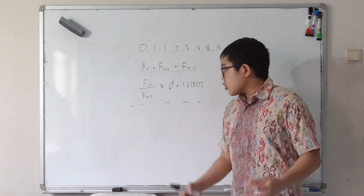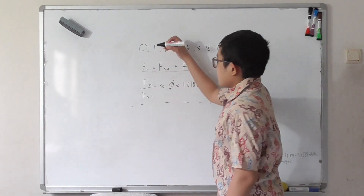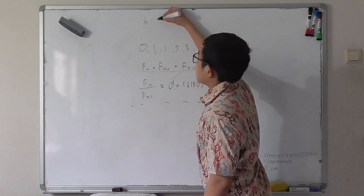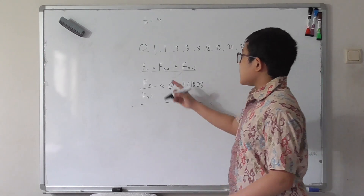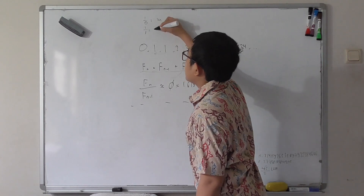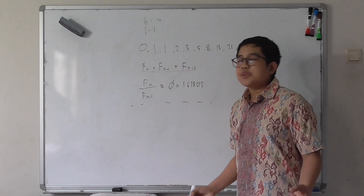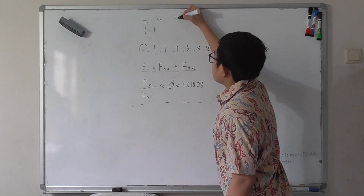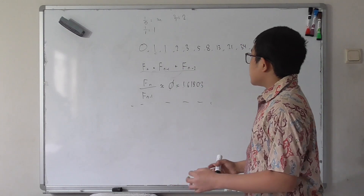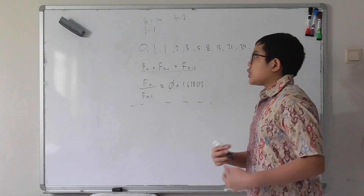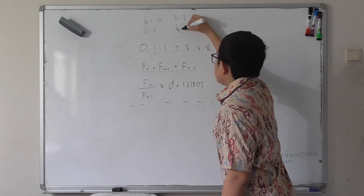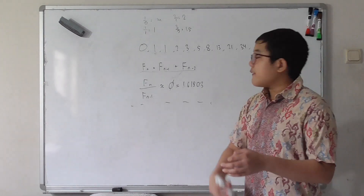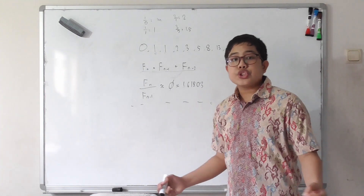For example, if we take the first term — 1 divided by 0 — we get undefined, because we can't divide by zero. But 1 divided by 1 equals 1, which matches the first digit of the golden ratio. Then 2 divided by 1 is 2, which is closer to the golden ratio than 1 was. And 3 divided by 2 is 1.5, which is pretty close and almost resembles the second digit. As we use larger and larger values, we're going to approximate the golden ratio better and better.